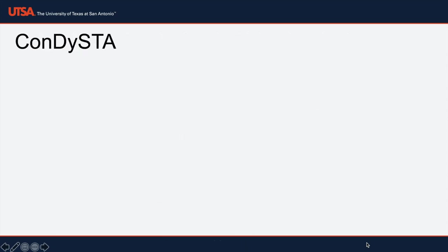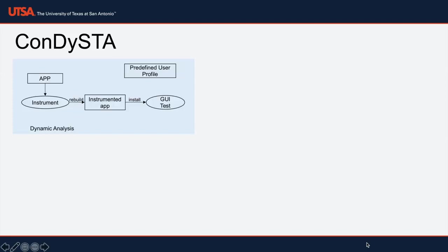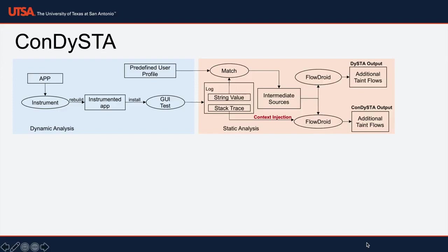So, we propose Condesta to reduce the false negatives, which uses dynamic taint analysis results as additional sources for static taint analysis while remaining context sensitive.